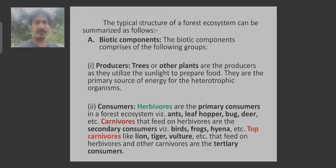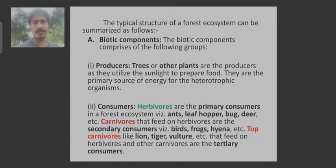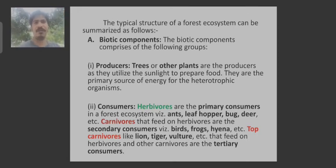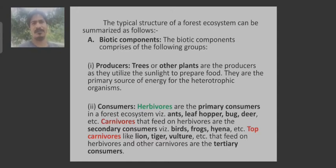Carnivores are those that feed on the herbivores — for example, birds, frogs, hyenas, etc. Then come your top carnivores. Top carnivores are the organisms present at the apex of an ecosystem — they eat other organisms but are not eaten by any other organism; they are like the king of the kingdom. Top carnivores like lion, tiger, vulture, etc., that feed on herbivores and carnivores are the tertiary consumers.